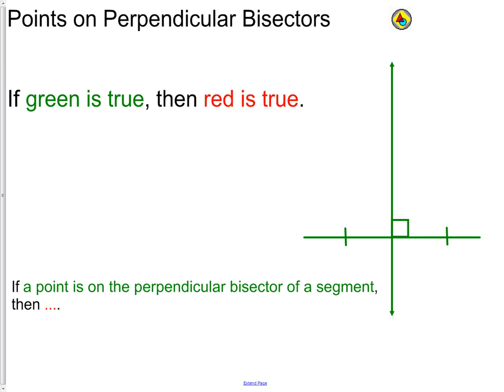We have different types of bisectors. The first one we're going to talk about is perpendicular bisectors. A perpendicular bisector involves two words: perpendicular, meaning two segments or lines that cross at 90-degree angles, and bisector, which means to cut into two congruent pieces. Points on the perpendicular bisector appear on the line that is bisecting the other line segment.